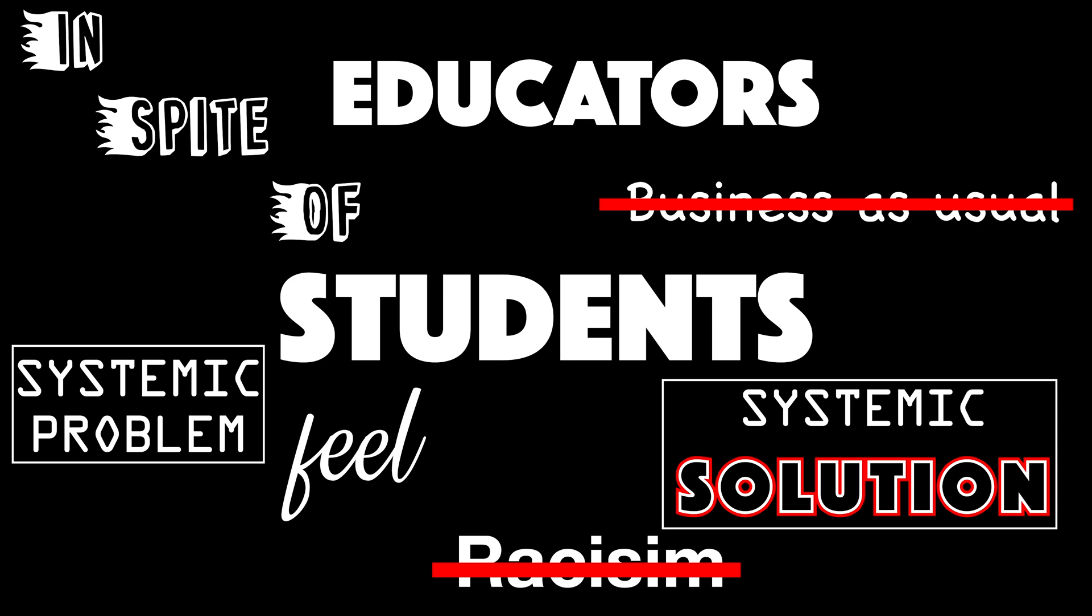then I think part of the solution is to be systemic itself. That means we should be able to come together and why not systematically have a city, a state, or a whole country have things that we change within our curriculum, or different classes that we add to the graduation requirement to begin to tackle the systematic problem of racism.